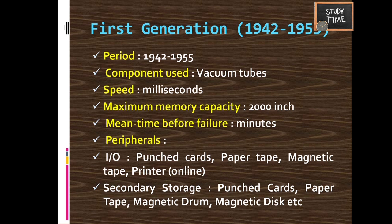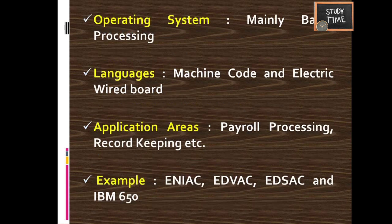The period of first generation computers is 1942 to 1955. Component used: vacuum tubes. Speed: milliseconds. Maximum memory capacity: 2000 inches. Mean time before failure: minutes. Input/output peripherals: punch card, paper tape, magnetic tape, printer. Secondary storage: punched cards, paper tape, magnetic drum, magnetic disc. Operating system: batch processing. Languages: machine code. Application: payroll processing and record keeping. Examples: ENIAC, EDVAC, EDSAC, and IBM 650.